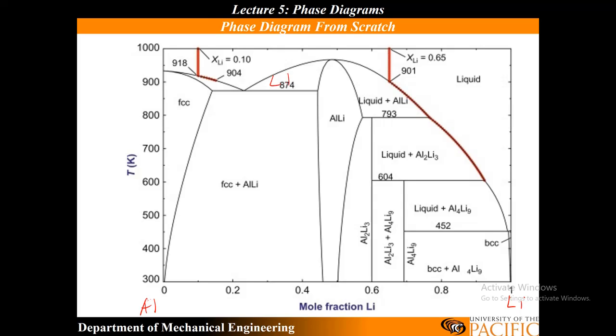Except this region is liquid plus FCC aluminum. That's pretty much the only unlabeled point. So what are my invariant points? Well, I've got congruent melting here, congruent melting right here, and congruent melting right at this point.